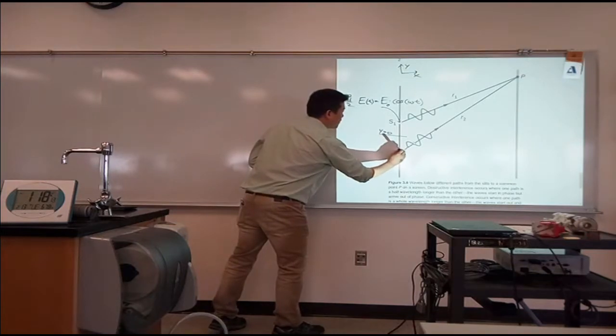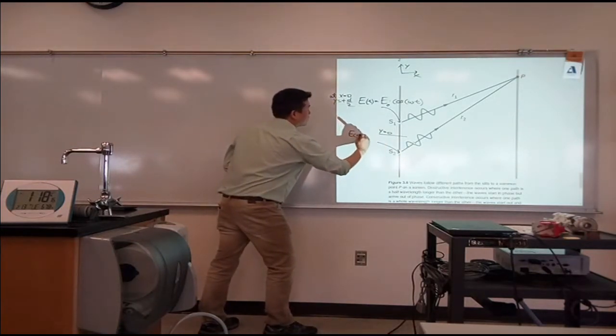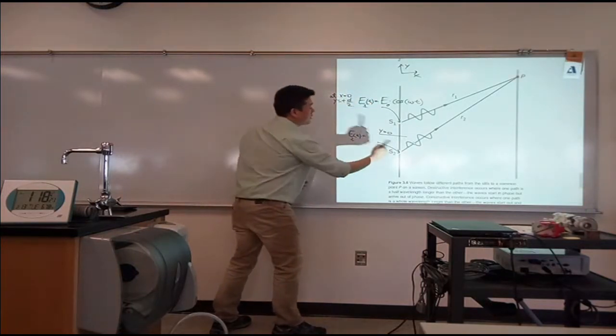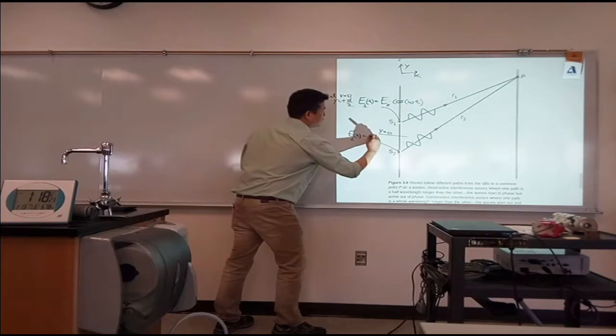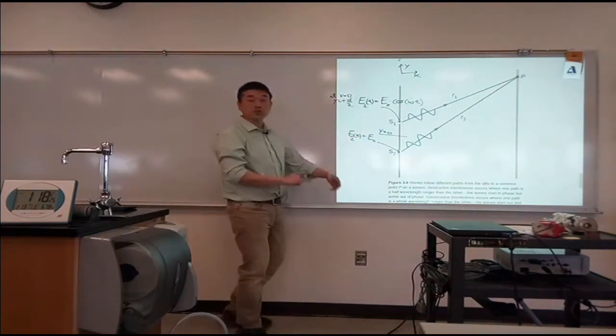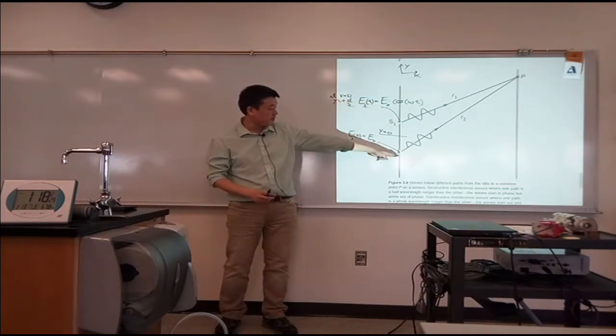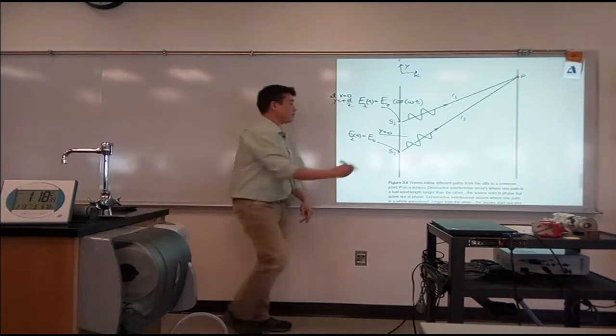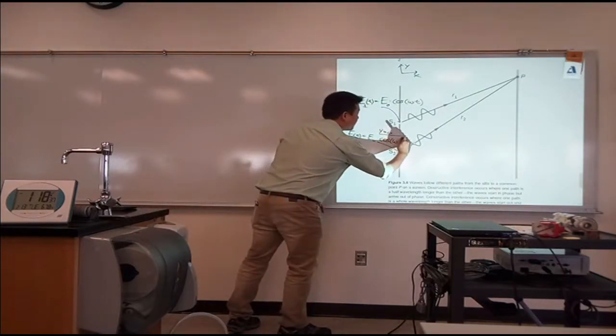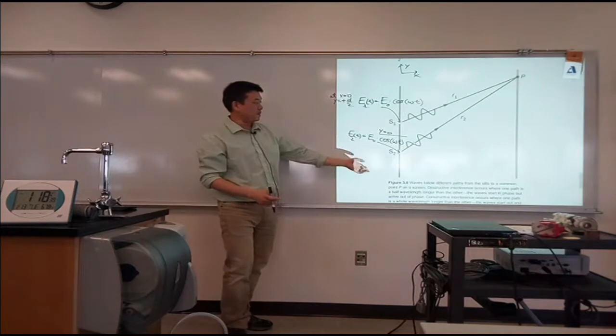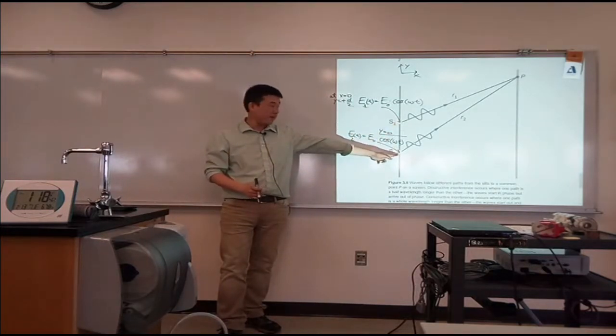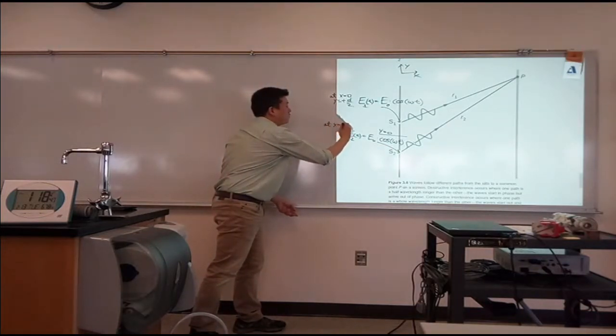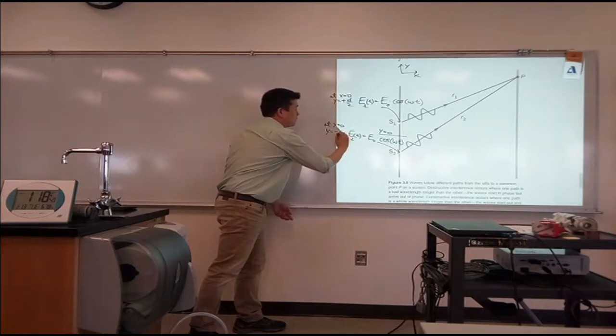And the electric field here, I could describe it as, so this is electric field one, electric field two. And electric field here, I could describe this as the same amplitude, assuming the intensity here and here are the same. The amplitude of electric field would be the same also. times cosine of omega t, that's what we mean, these two are in phase. They have the same phase as they are coming out of this slit, and this would be at x equals zero, and y equals minus d over two.